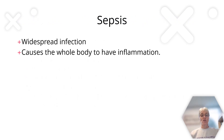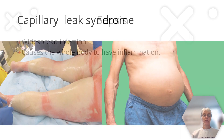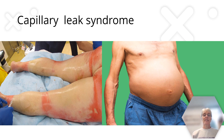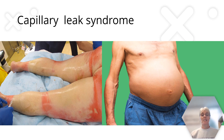Sepsis is another type of distributive shock where you have widespread infection throughout the entire body, causing whole-body inflammation. All the fluid starts leaking out into the capillary and interstitial tissues and you end up losing fluid volume. This is an example of capillary leak syndrome — the fluid is not lost from the body, but it is lost from circulation.